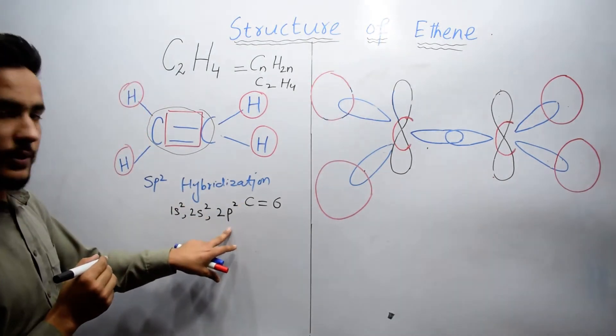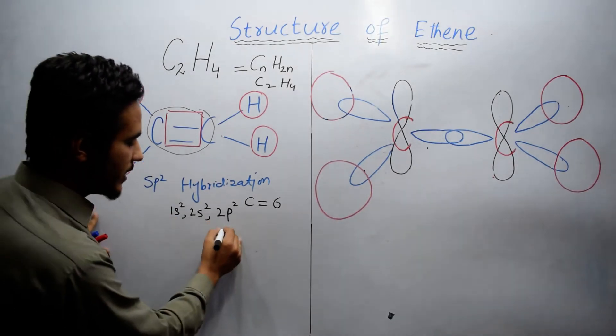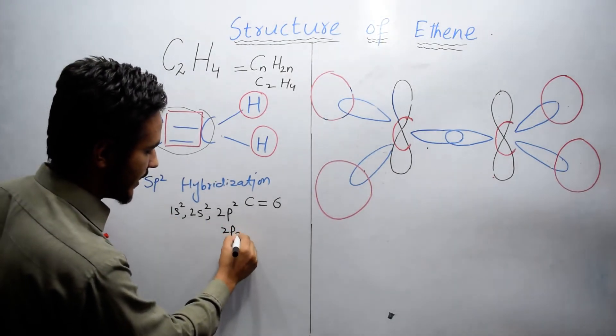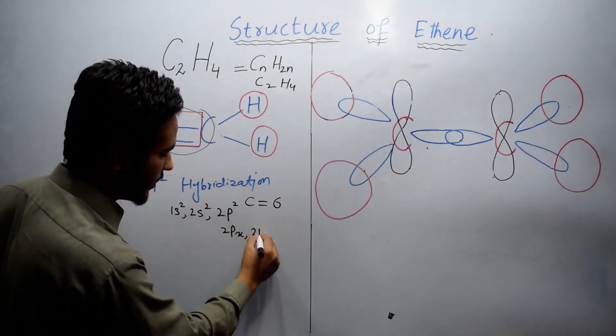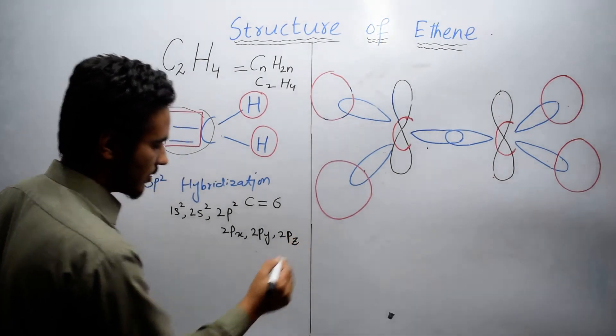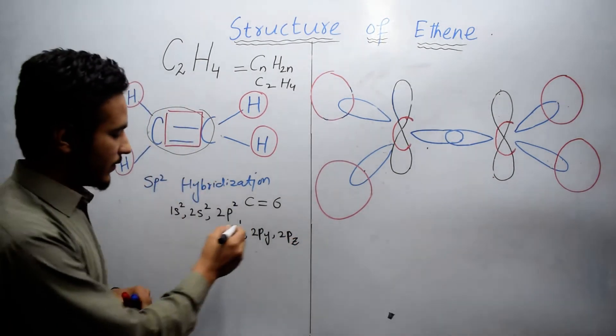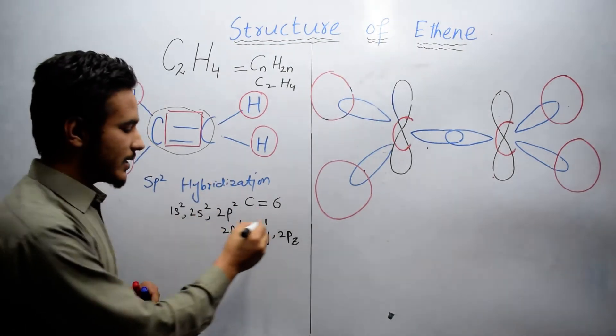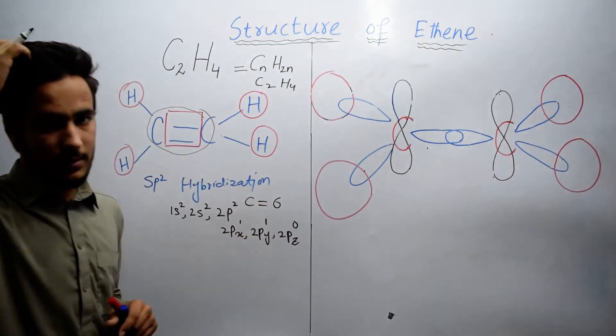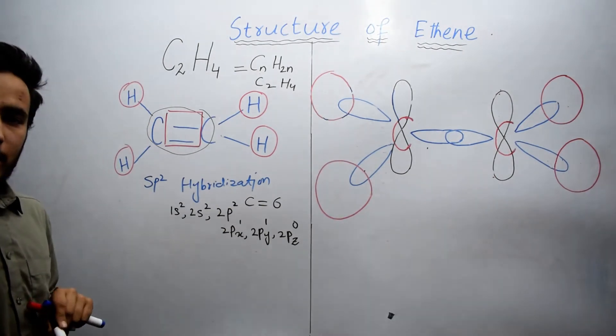But here we have p composed of 3 atomic orbitals, so it is composed of 2Px, 2Py, and 2Pz. If it has 2 electrons, then Px has 1 electron, Py has 1 electron, and Pz has 0 electrons. So this is the general electronic configuration.